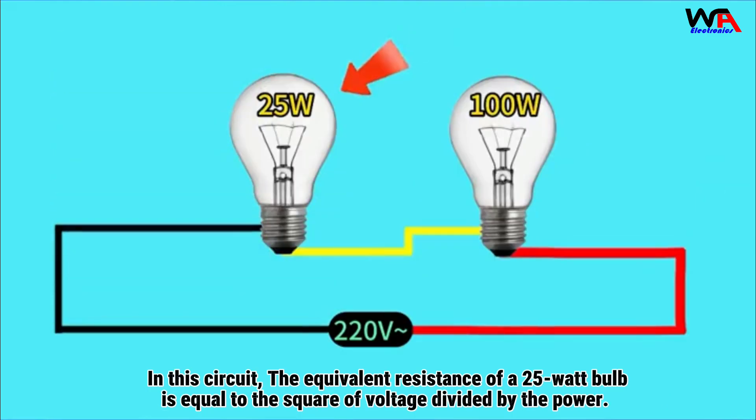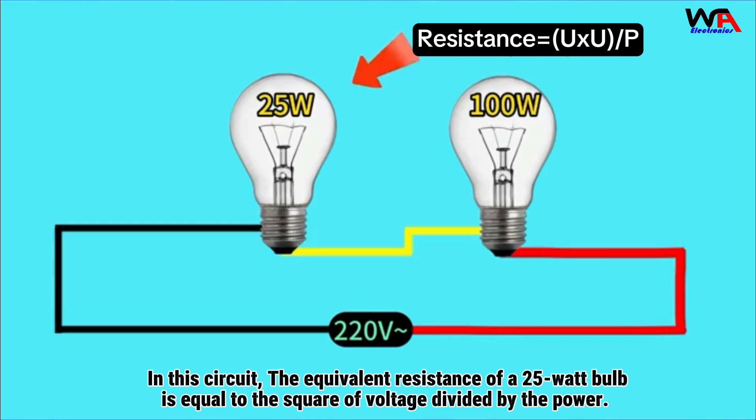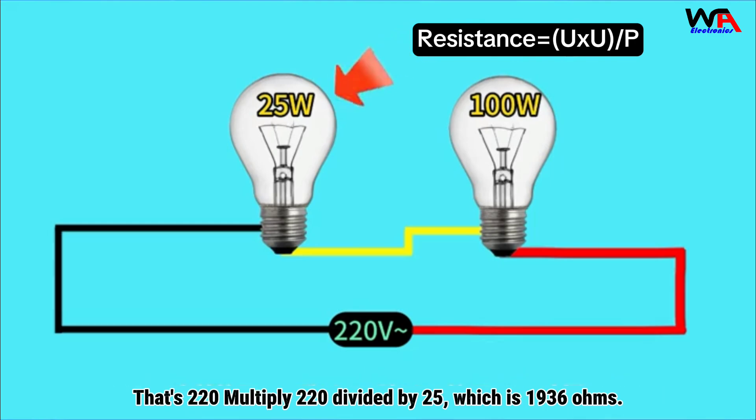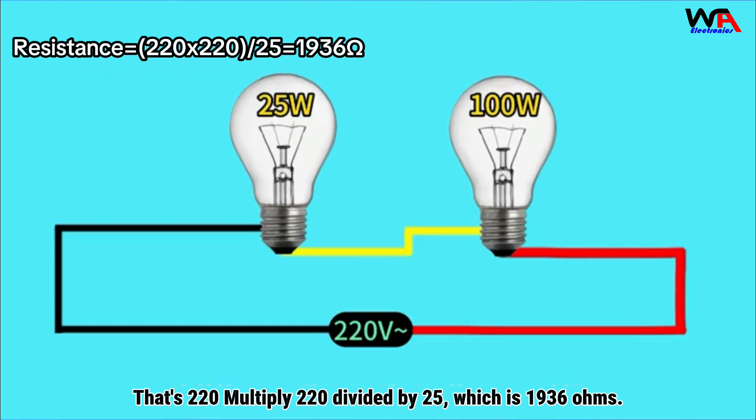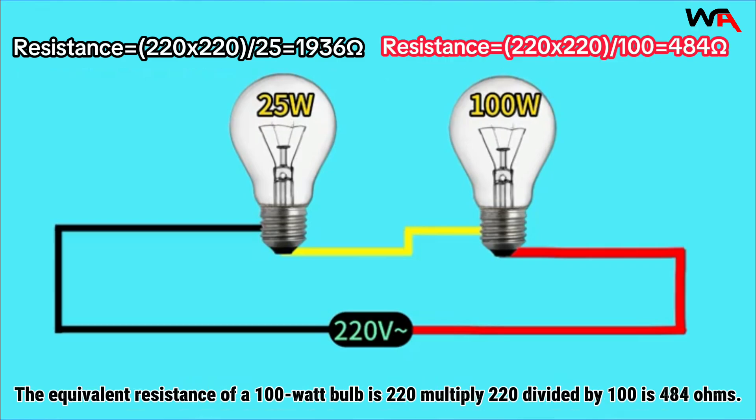In this circuit, the equivalent resistance of a 25-watt bulb is equal to the square of voltage divided by the power. That's 220 multiply 220 divided by 25, which is 1936 ohms. The equivalent resistance of a 100-watt bulb is 220 multiply 220 divided by 100, which is 484 ohms.